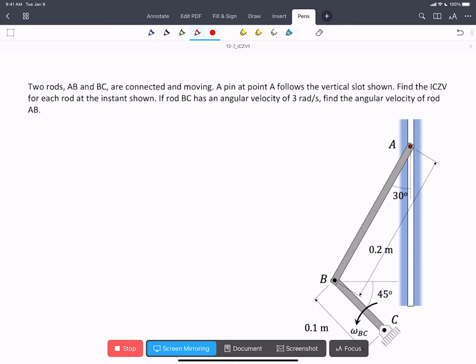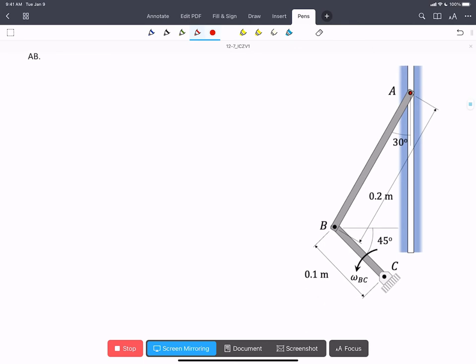So we're going to start with BC. We can actually just say that C is the ICZV of BC. That's because it's a physical pin, and it's going to have zero velocity at C.